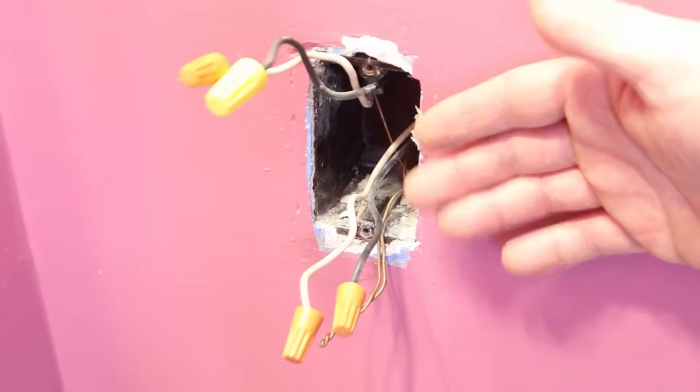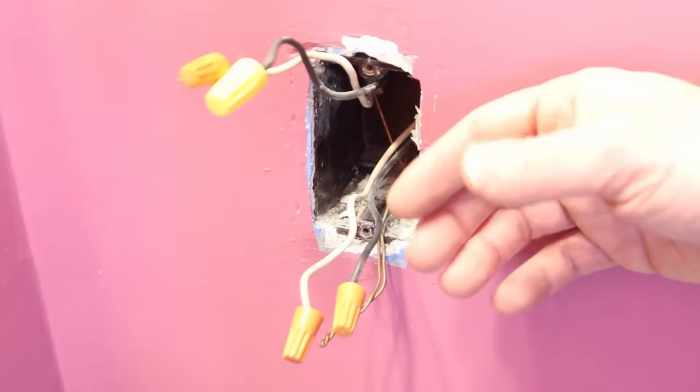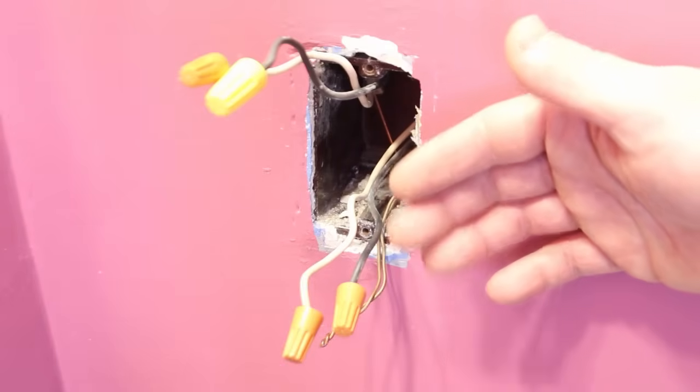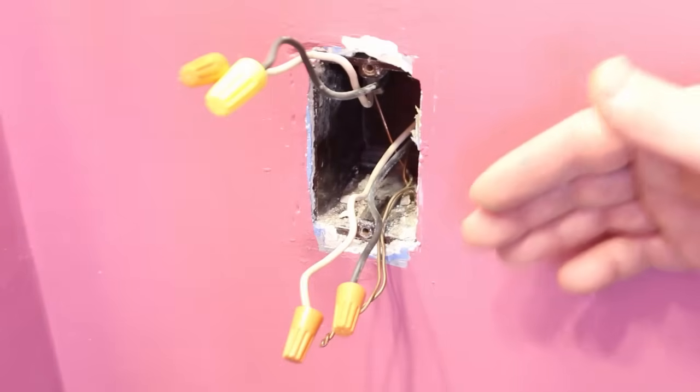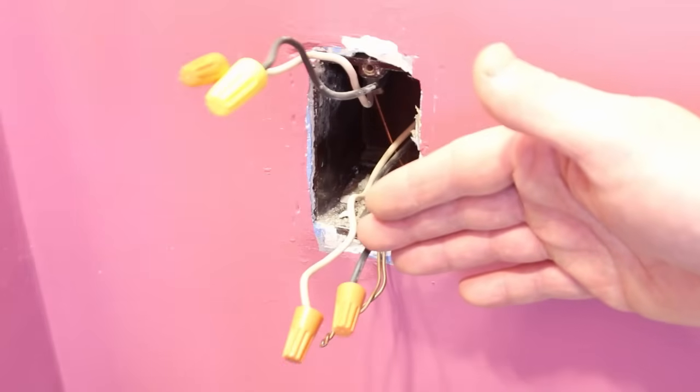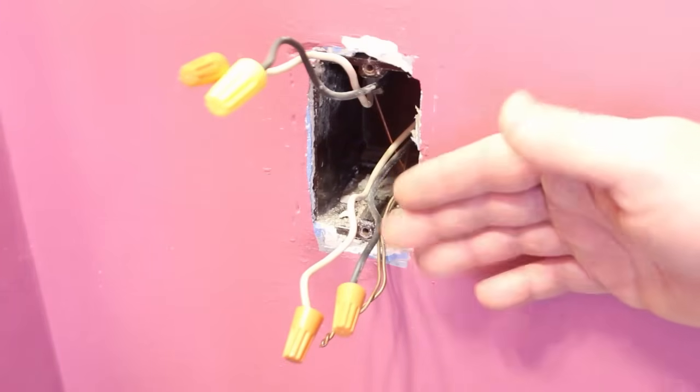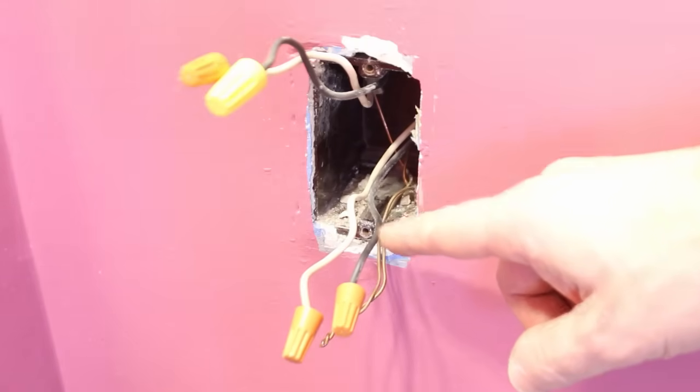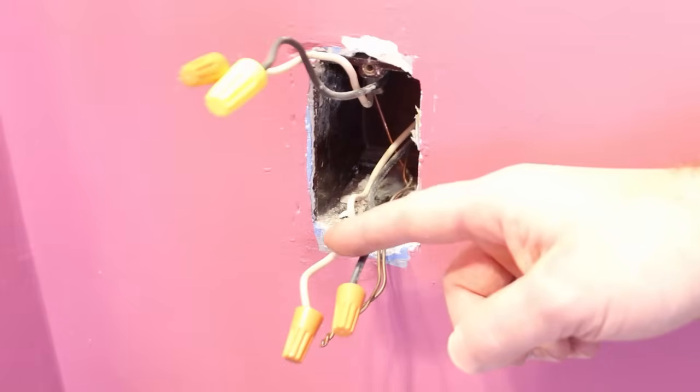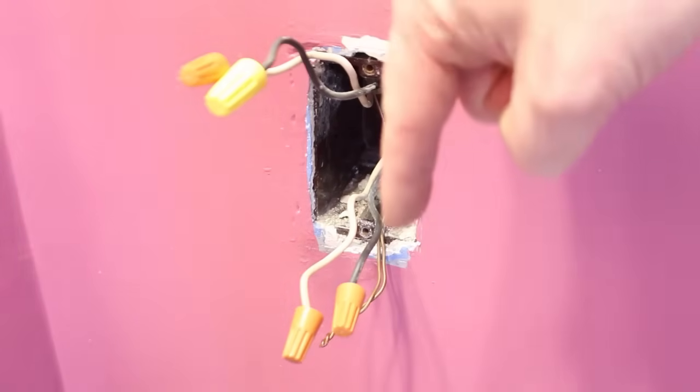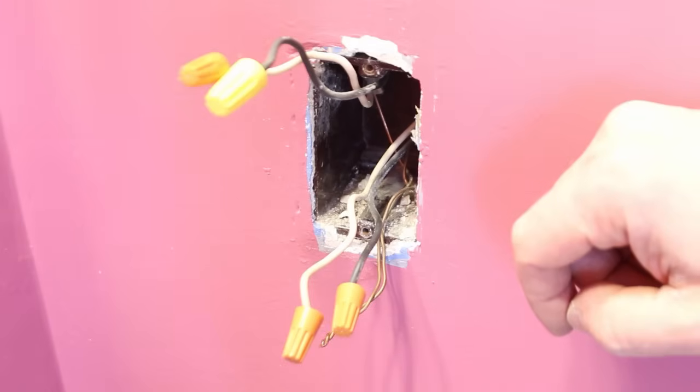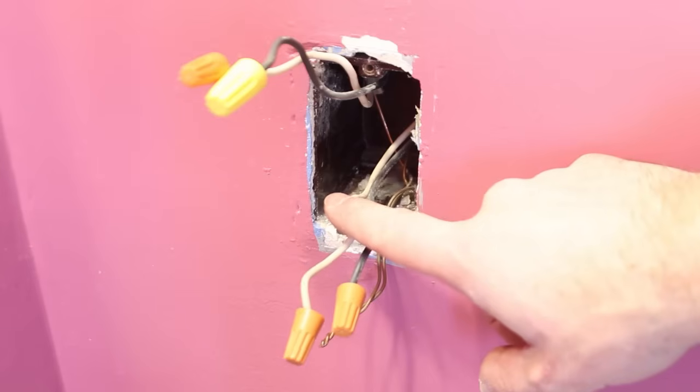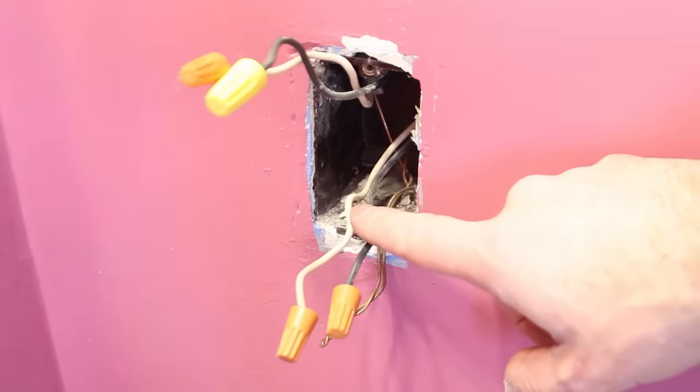The line wires carry electricity from the source—for example, another outlet or the panel—to this outlet. So we need to figure out which wires are the line wires and which are the load wires. My guess is that these are the line wires, the wires carrying electricity to the box. Why is that my guess? Well, my electric panel is below us in the garage, and these wires are coming up. So chances are this could be the electrical source.